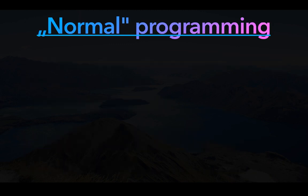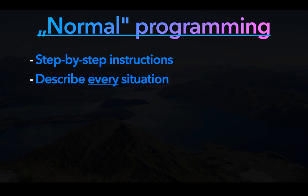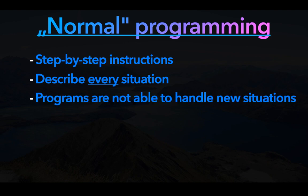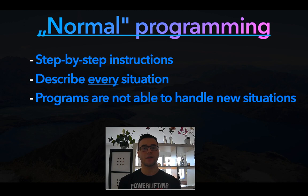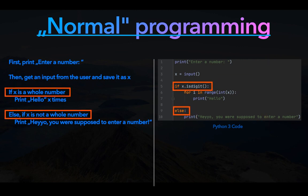In normal, so-called imperative programming, you give the computer step-by-step instructions on what to do. You describe every situation that the program can encounter and tell the computer what to do in that situation. That also means your program is not able to handle new situations — situations that you haven't described. Pause the video if you want to check it out in detail. On the right you can see how this looks in a real programming language — this one is currently my favorite and it's called Python. We use if and else statements to describe a situation and what to do in that situation. This does of course have some limits.